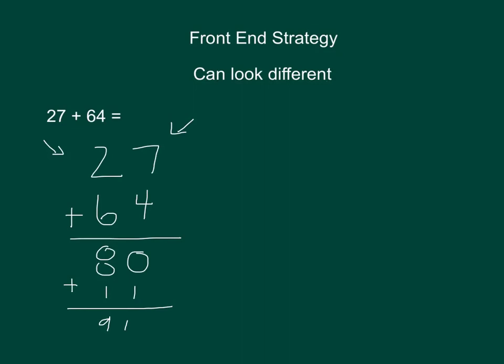Another way to record the same question using the front-end strategy is again by vertically stacking the numbers. We write 27 in expanded form and we write 64 in expanded form. Instead of adding horizontally we add vertically. 20 plus 60 is 80. 7 plus 4 is 11. 80 plus 11 equals 91.